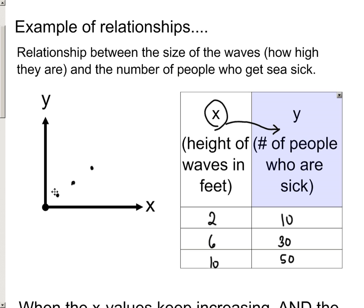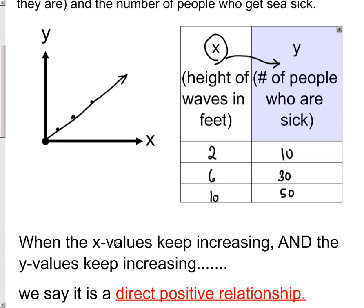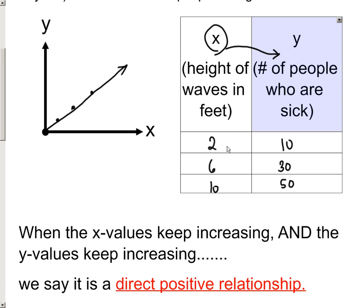As the x-values kept getting bigger and bigger, it would cause a straight line to be formed, and it would be going up to the right. And it's a very special relationship when these x-values are getting bigger and bigger. See how that went from two to six to ten? Well, at the same time, the y-values were getting bigger also. And when both of them get bigger, we just call it a direct-positive relationship. This direct is talking about how the height of the waves were affecting the number of people who were sick.